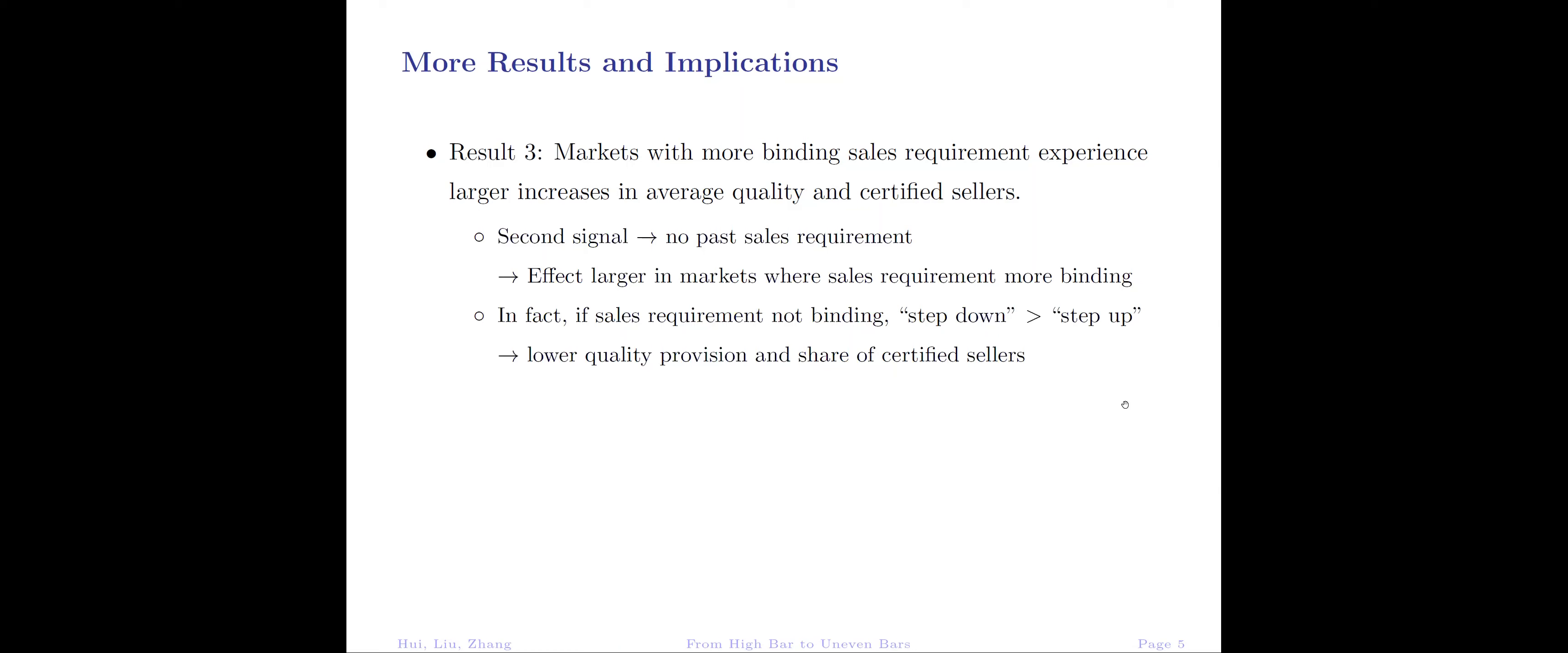We recall that the second signal helps young sellers because it has no requirements on past sales. Therefore, the effect will be larger in markets where past sales requirements of the certification are more binding. In fact, the sign on quality provision and share of certified sellers can reverse if the sales requirements are not binding, because some certified sellers may step down and provide lower quality as a result of the second signal.